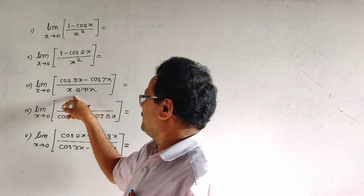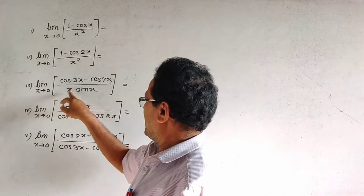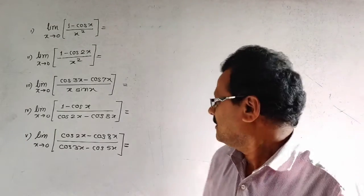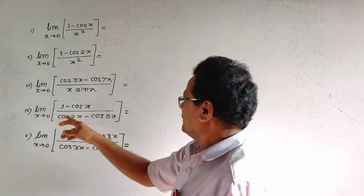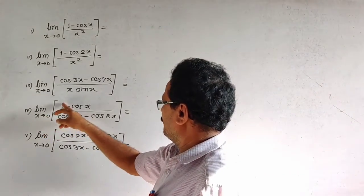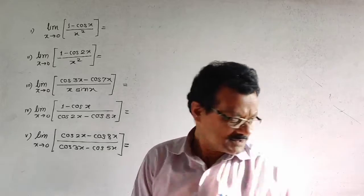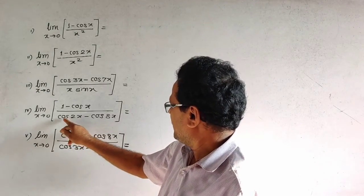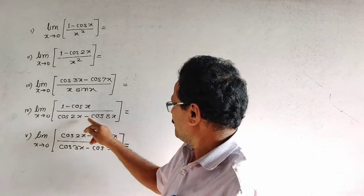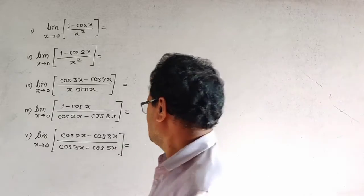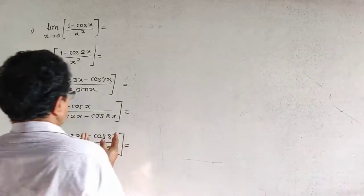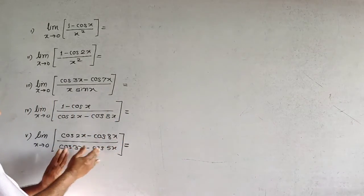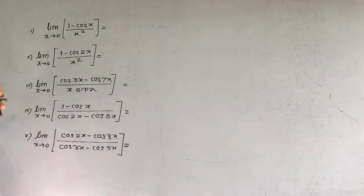Here x² is used, x tan x is used. Limit as x tends to 0 of (1 minus cos x) divided by (cos 2x minus cos 8x), and (cos 2x minus cos x) divided by (cos 3x minus cos 5x).